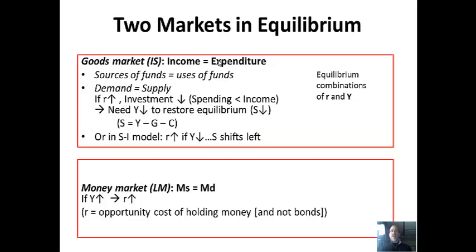I look at the IS curve as income equals expenditures — you could also see it as supply of goods equal to demand for goods. I use the aggregate expenditure or income-expenditure model. Basically, if a country must spend all it earns: if it spends too much, inventories are drawn down, which is out of equilibrium; if it spends too little, unemployment results because nobody wants to buy its goods and inventories build up. You could also approach it through the savings-investment model or aggregate demand equal to supply.